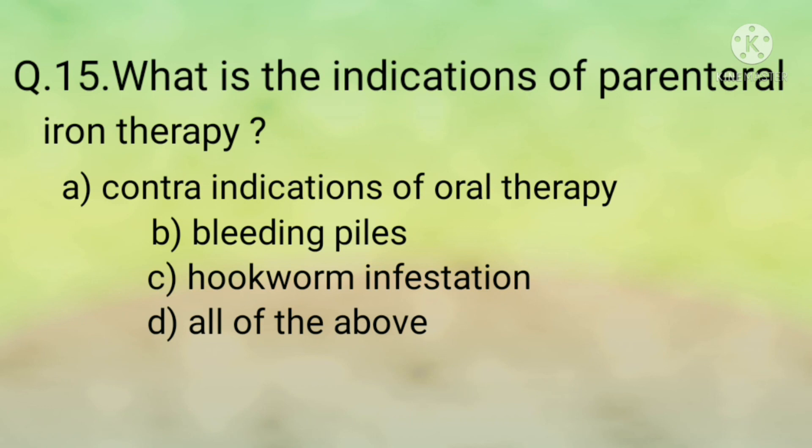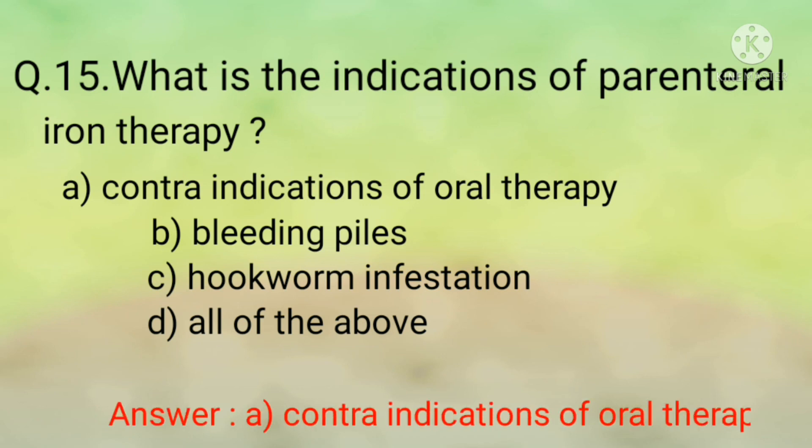Question number fifteen: What are the indications for parenteral iron therapy? Options are: option A, contraindication to oral therapy; option B, bleeding piles; option C, hookworm infestation; option D, all of the above. The correct option is option A, contraindication to oral therapy. If the woman cannot take the iron tablet orally, then only we have to give parenteral iron therapy.